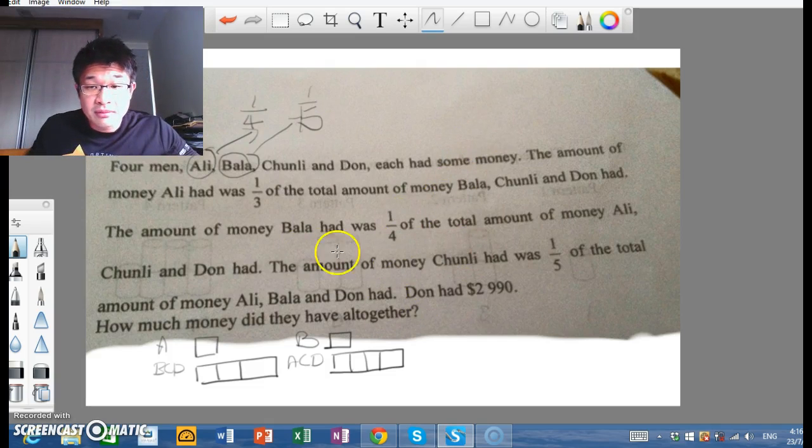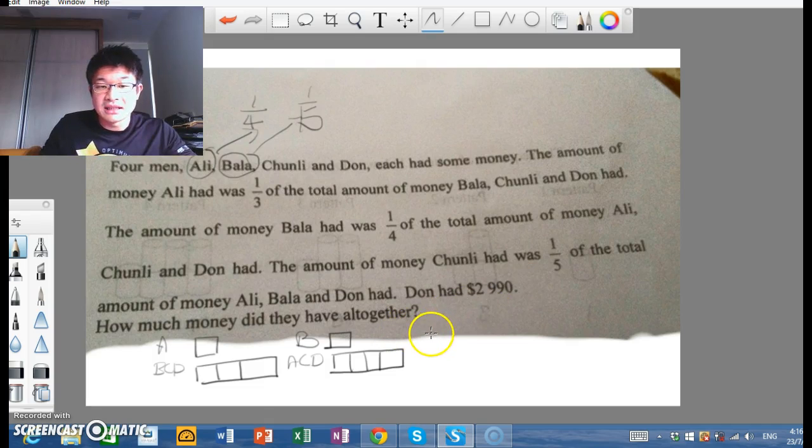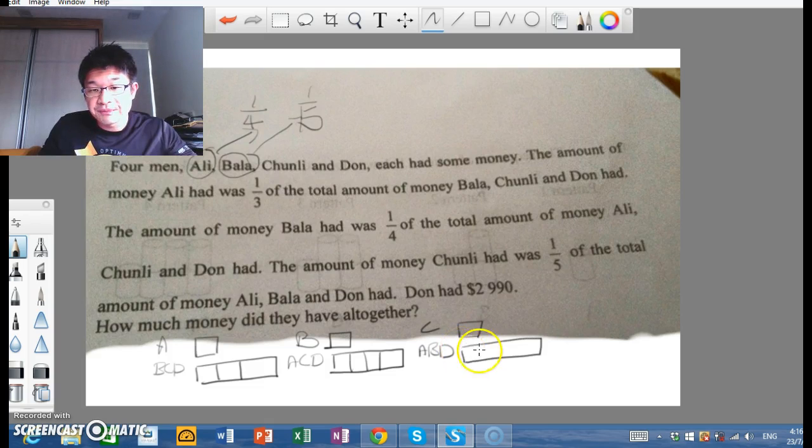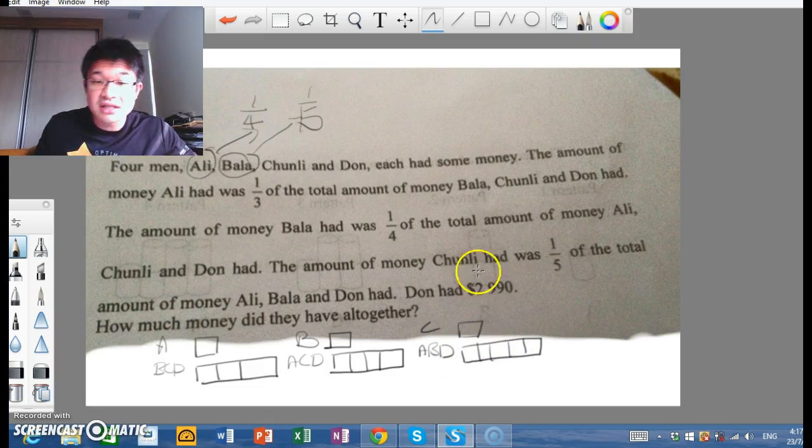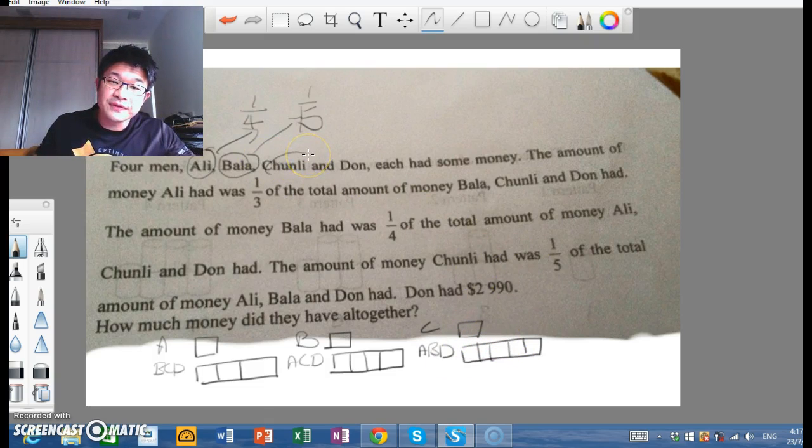And then we talk about Chunli now. Chunli had one-fifth the total amount of money, Ali, Bala, and Don had. So again, Chunli, then we talk about A, B, and D. So Chunli had one, the rest had five. So one, two, three, four, five. Again, we compare Chunli with the rest. Chunli actually has one-sixth of everybody. So Chunli actually has got one-sixth.